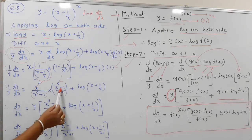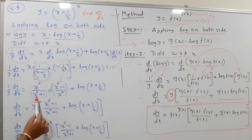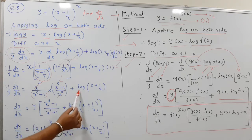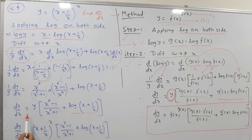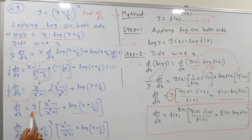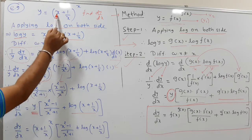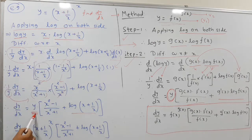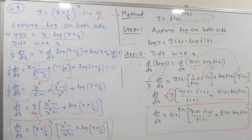After cancellation, the bracket simplifies to (x² − 1)/x² + log(x + 1/x). Multiplying both sides by y and substituting y = (x + 1/x)^x, the final answer is: dy/dx = (x + 1/x)^x · [(x² − 1)/x² + log(x + 1/x)].